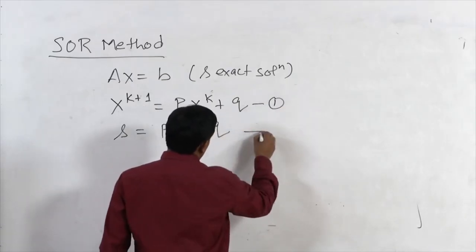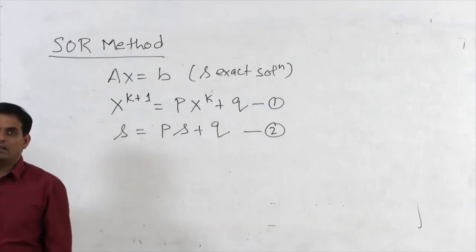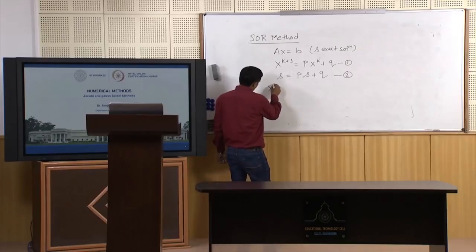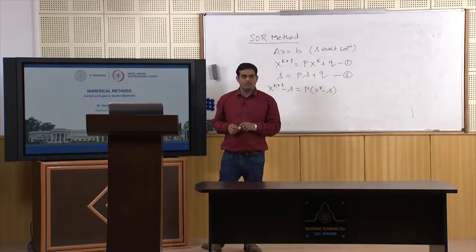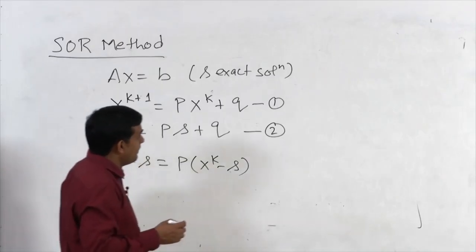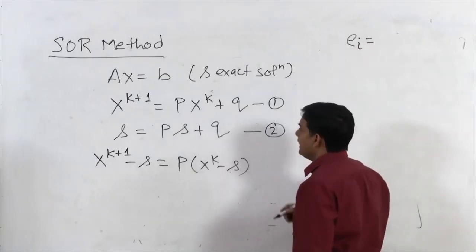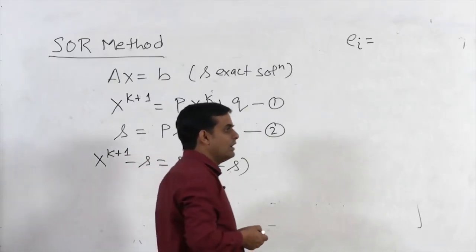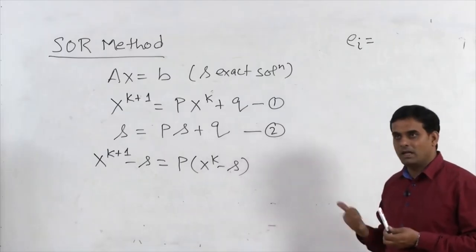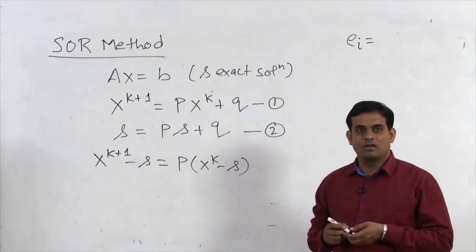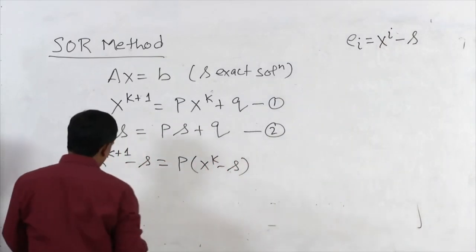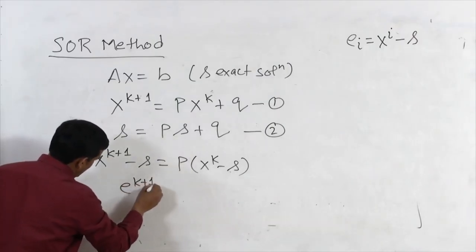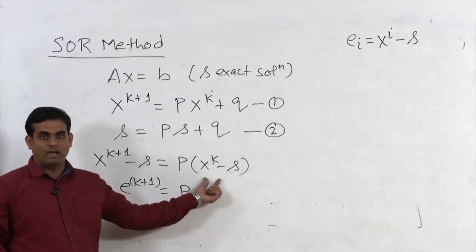Subtracting the equation for the exact solution from the iterative scheme gives x^(k+1) − S = P(x^(k) − S), since Q cancels. Denoting E_i as the error in the i-th iteration — the difference between x^(i) and the exact solution S — we can write the error recurrence as E^(k+1) = P · E^(k).